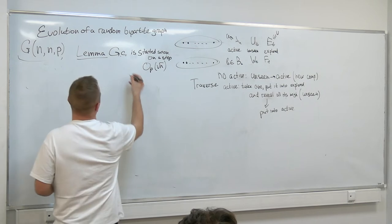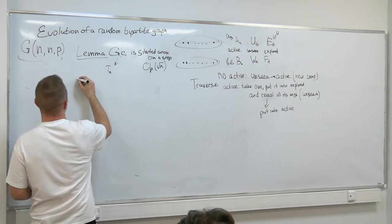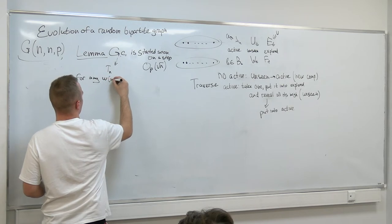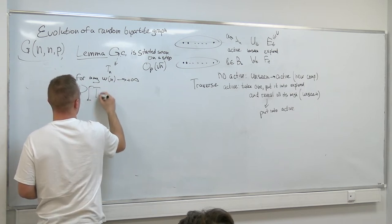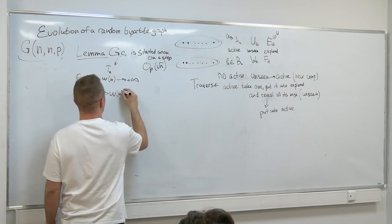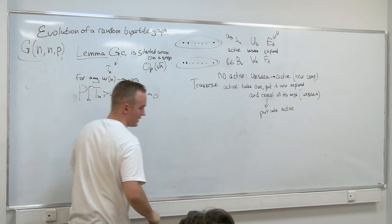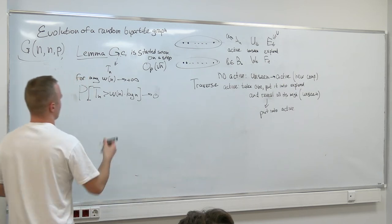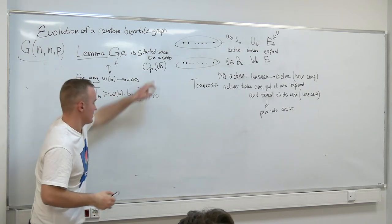Lemma: the giant component is started soon. Let's denote this moment by T_N and prove that for any W_N which grows, the probability that T_N is larger than W_N times log N tends to zero. So we've started our component at some logarithmic time, which is much smaller than square root of N.